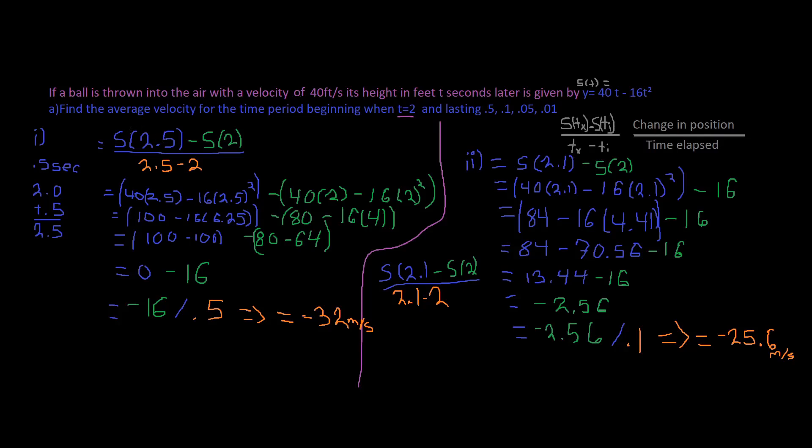So we have our function s of 2.5. Why? Because we start at time 2, and then we add 0.5. So 2 plus 0.5 equals 2.5. And this is our initial, right? Our initial is 2, because that's the time elapsed. Now we plug in these numbers into this function.